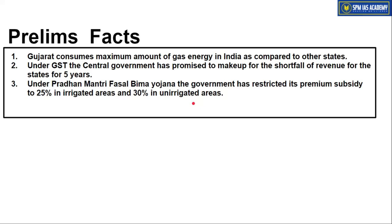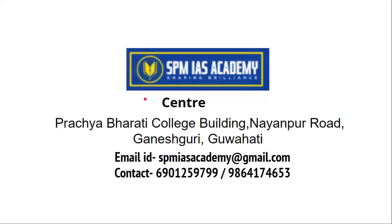Some prelims-related facts from today's newspaper: Gujarat consumes the maximum amount of gas energy in India compared to other states. Under GST, the central government has promised to make up for the shortfall of revenues for states for five years. Under Pradhan Mantri Fasal Bima Yojana, the government has restricted its premium subsidy to 25% in irrigated areas and 30% in unirrigated areas. That's all for today — thanks for watching.